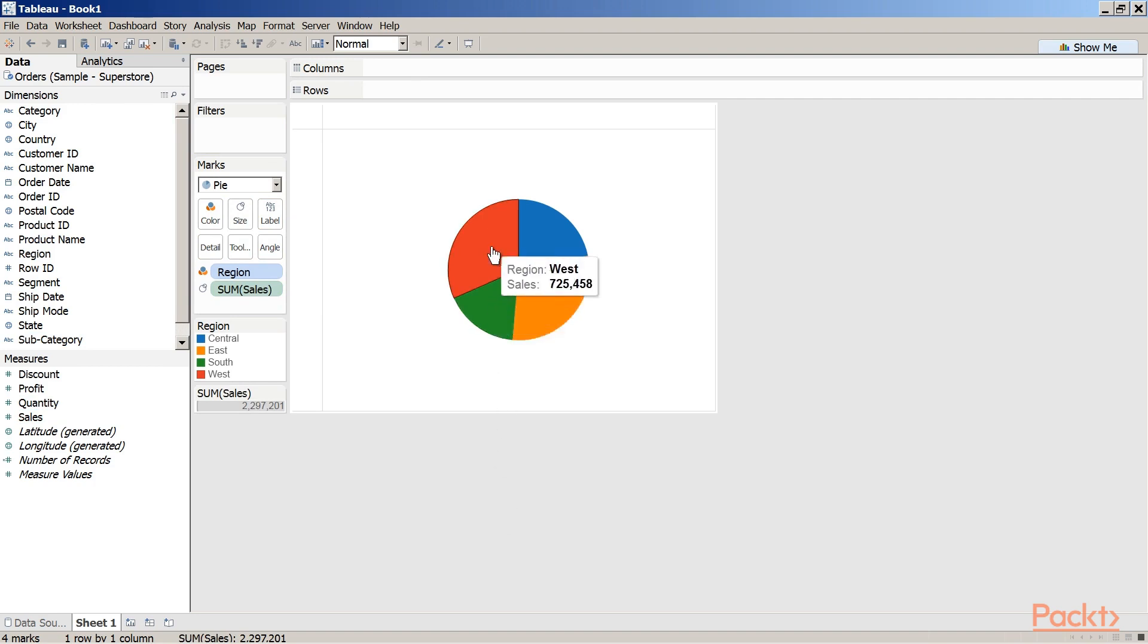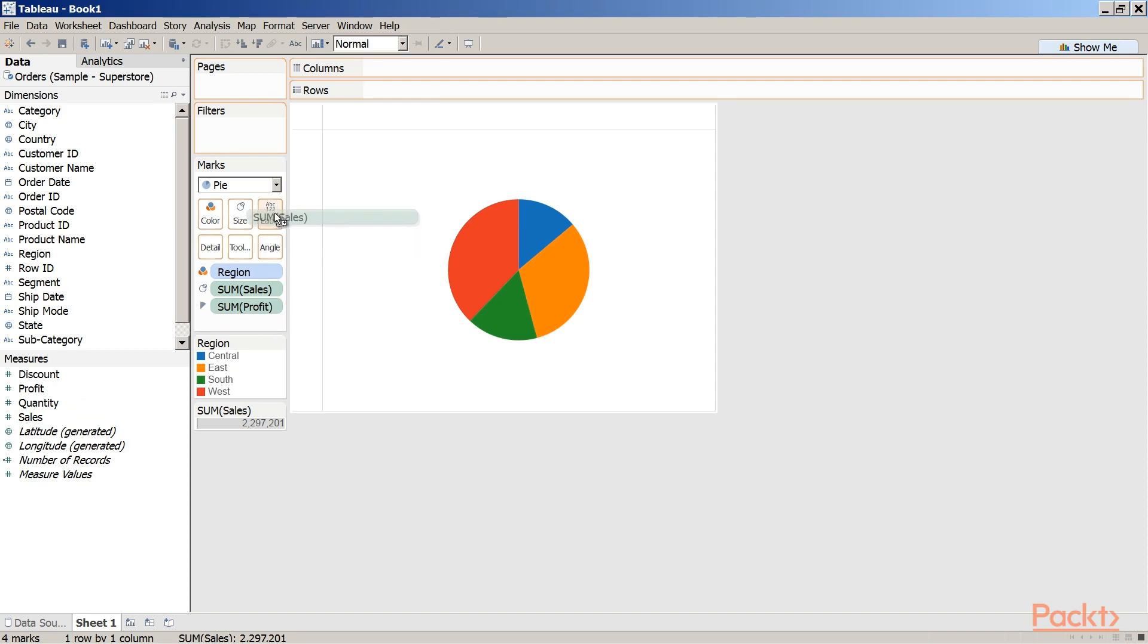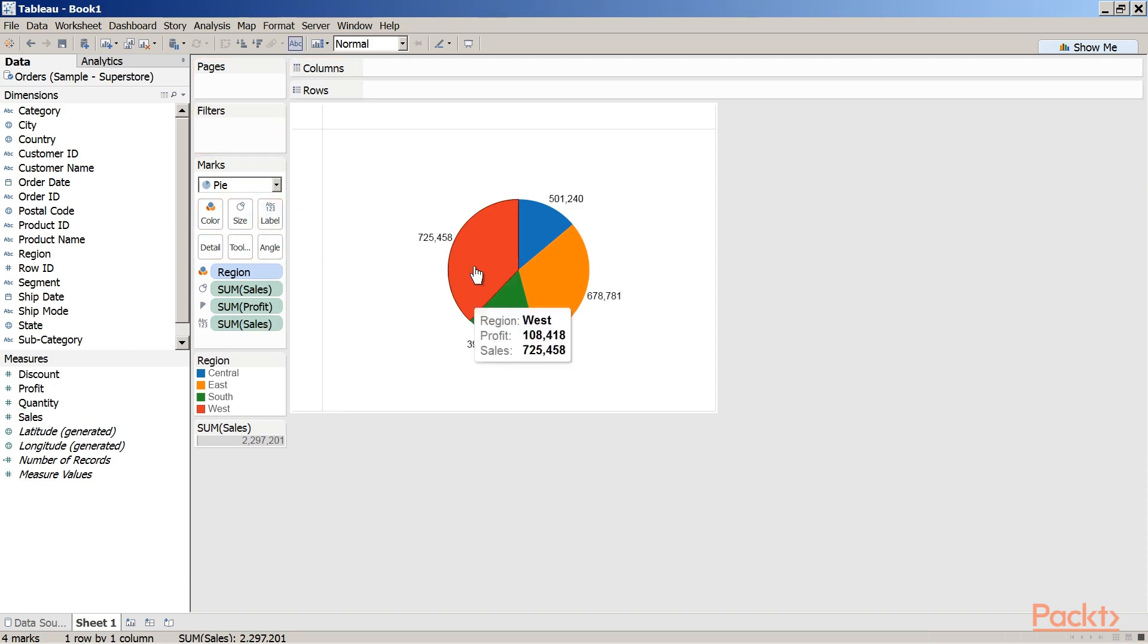Drag the measure profit and place it on angle on the marks card. The angle of the slices is now as per the profit made in each region. Drag the measure sales and place it on label on the marks card.